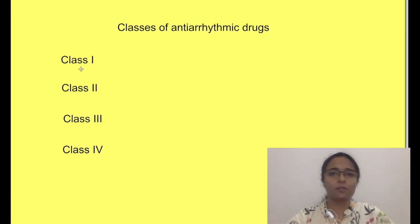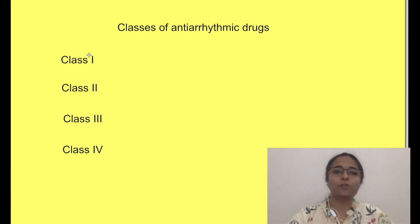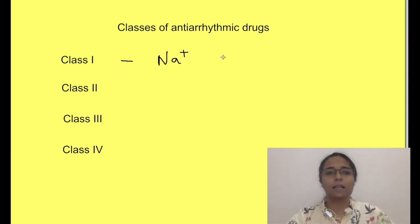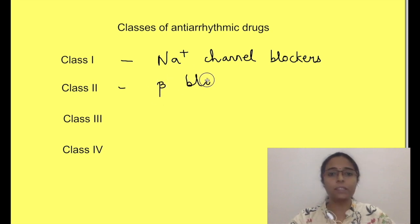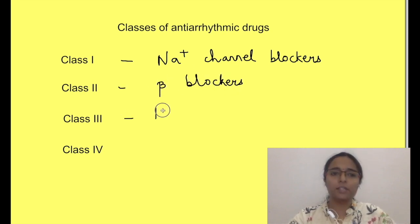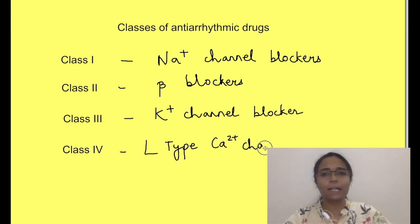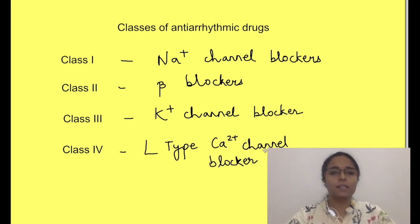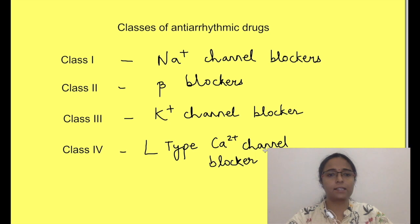Let us see what are the classes of antiarrhythmic drugs. There are four classes of antiarrhythmic drugs depending on which channels or receptors they block. Class 1 drugs block sodium channels, class 2 drugs are beta blockers, class 3 drugs block potassium channels, while class 4 drugs are calcium channel blockers.